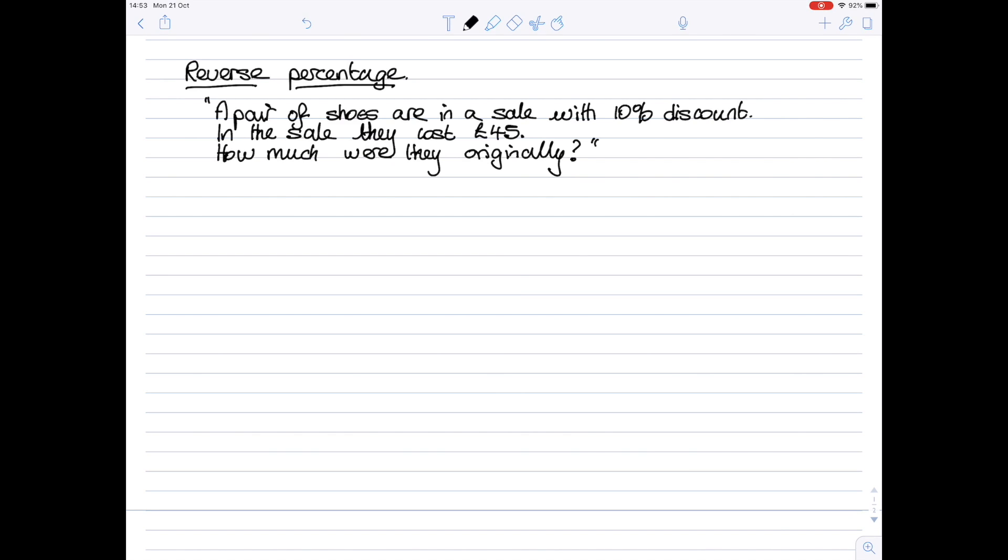Now you may well find it easier to write it down if you make up an original value, if you call it by an unknown which is x. So I'm going to say let the original price be x pounds. That's the value of x you are trying to find. Now that's the original price, that's the total amount, so that's really the 100% value.